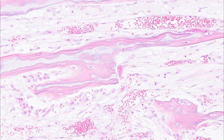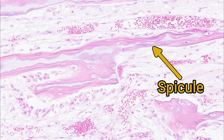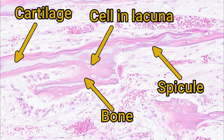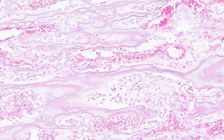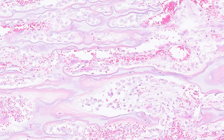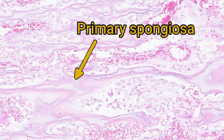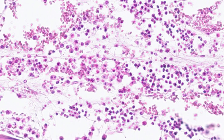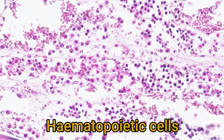You can spot osteoblasts as large cuboidal cells with quite a bit of cytoplasm lining the edges of the cartilage and part-cartilage, part-bone columns. These columns are often referred to as spicules. The areas converted to bone stain pink, while the cartilage retains its glassy blue appearance, often as a central core. Some osteoblasts have entered the bony spicules and formed lacunae where they mature into osteocytes. The bone formed here is woven bone — immature and relatively disorganised. These spicules of woven bone are called primary spongiosa, with hematopoietic cells in the marrow spaces churning out new red and white blood cells.